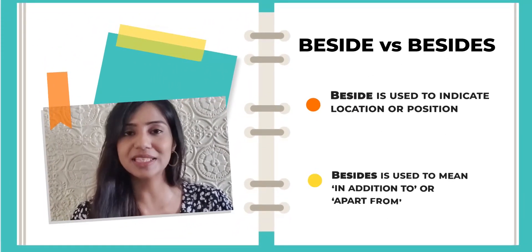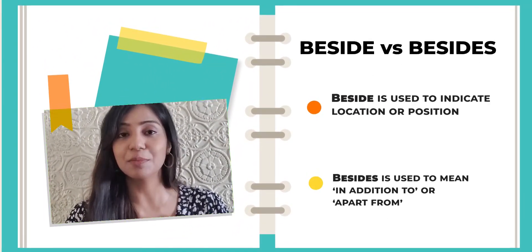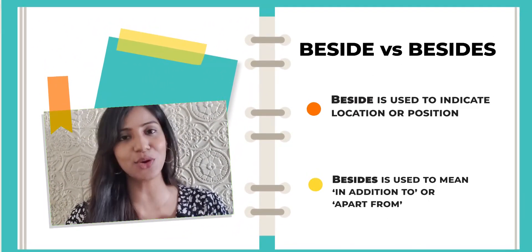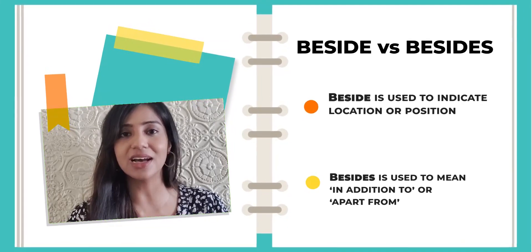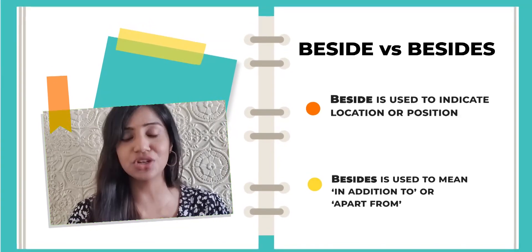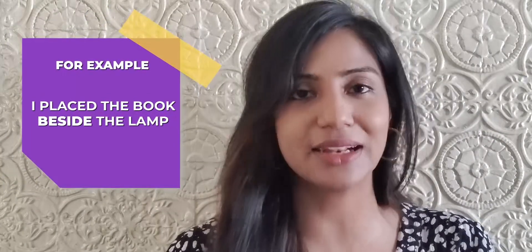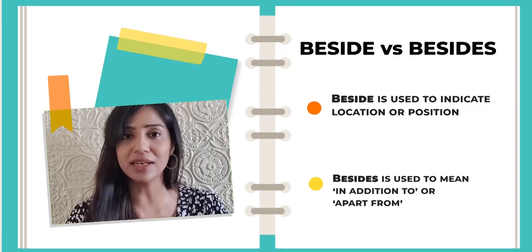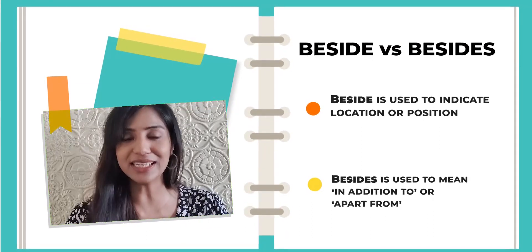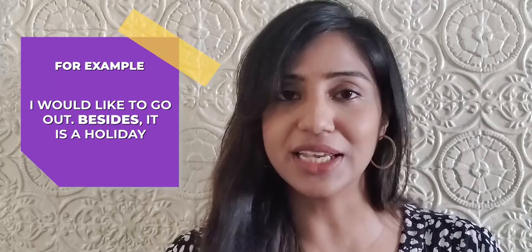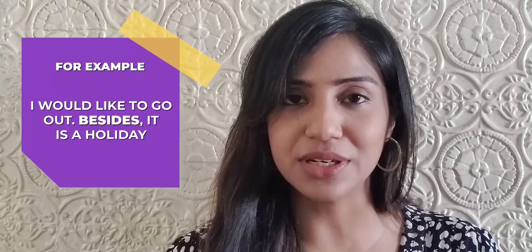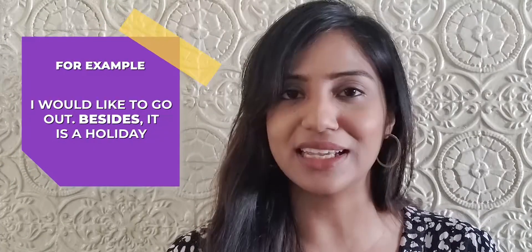Number 6: beside versus besides. Beside is always used to indicate either location or position. For example: I placed the book beside the lamp. Besides is used to mean apart from or in addition to. For example: I would like to go out. Besides, it is a holiday.